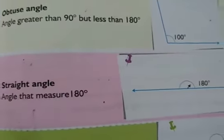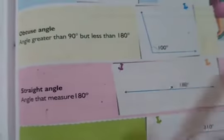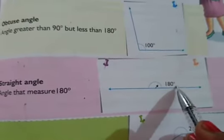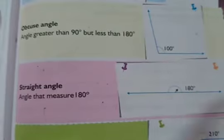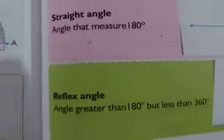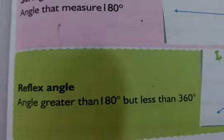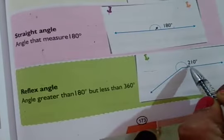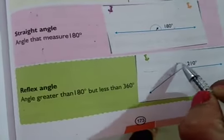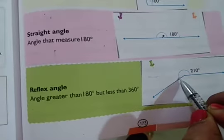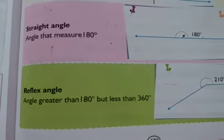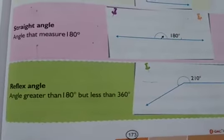A straight angle is an angle that measures 180 degrees — this is a straight angle. A reflex angle is an angle greater than 180 degrees but less than 360 degrees. For example, 210 degrees is more than 180 but less than 360, so this type of angle is called a reflex angle.